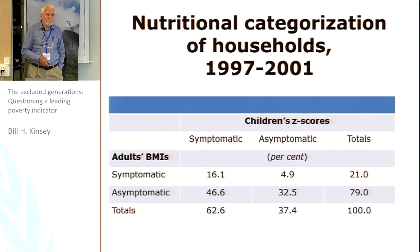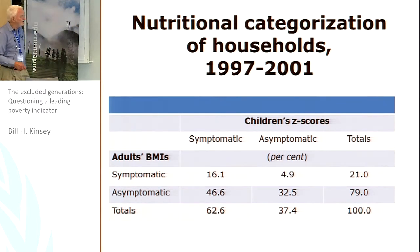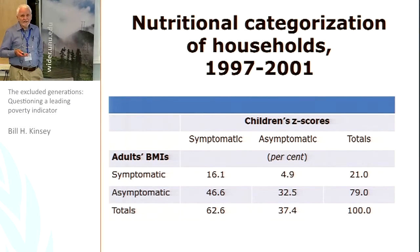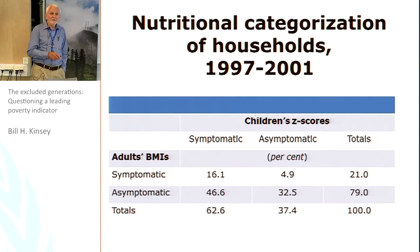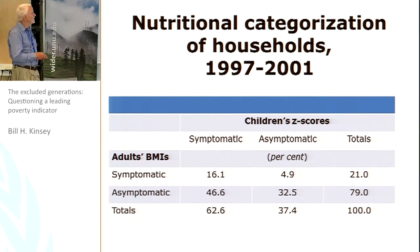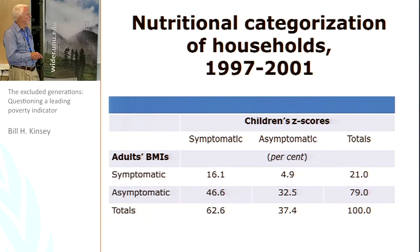I was very puzzled by this, which led me to play around with some development economic concepts. One was to look at these outcomes on a household basis, considering the nutritional status of both adults and children. Over a five-year period, just for illustration, a household is symptomatic if undernutrition exists — below two standard deviations for children and below a body mass index of 18.5 for adults.